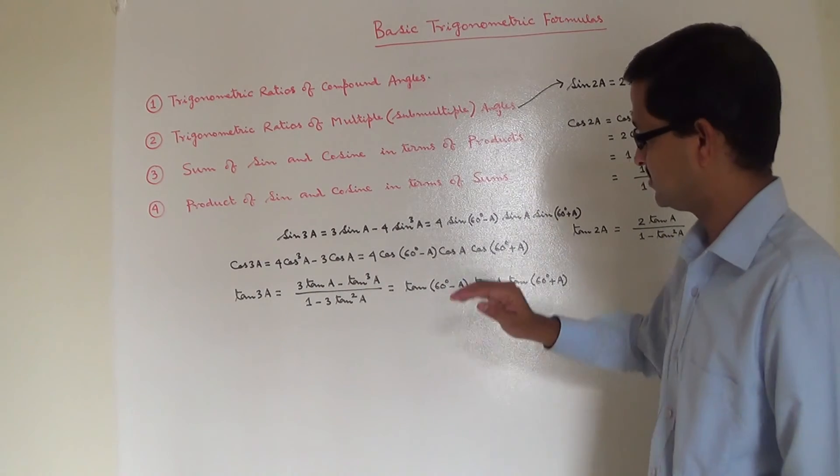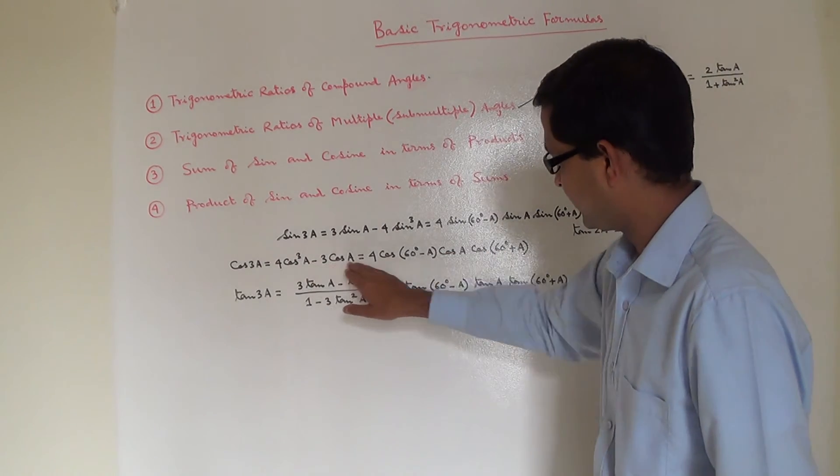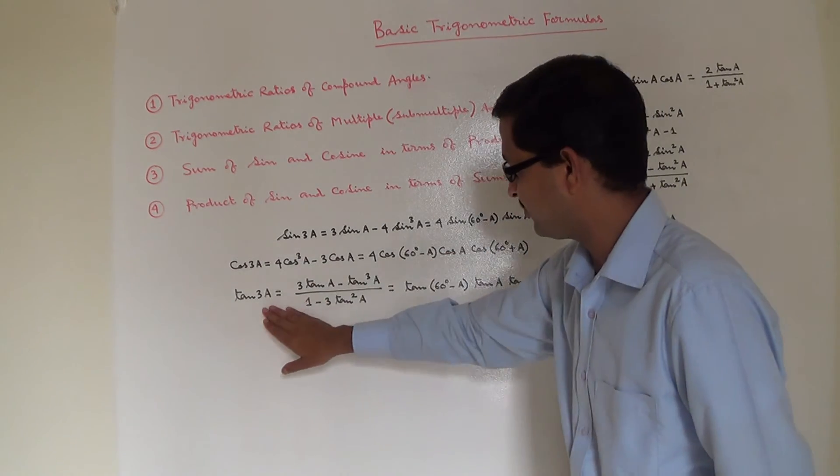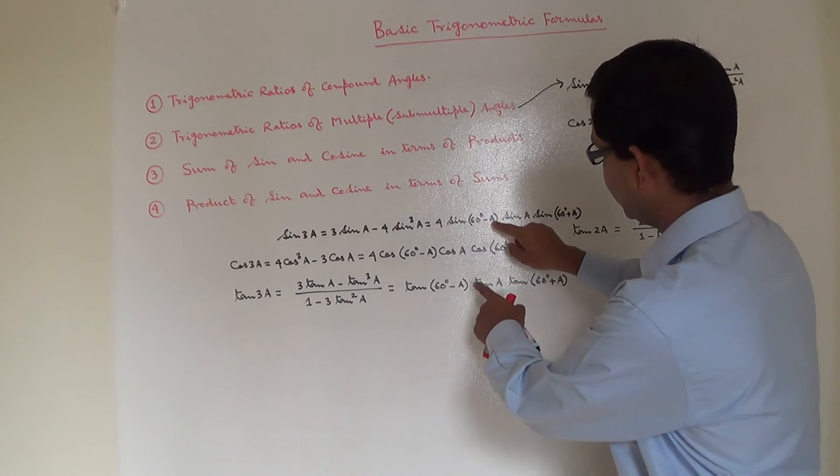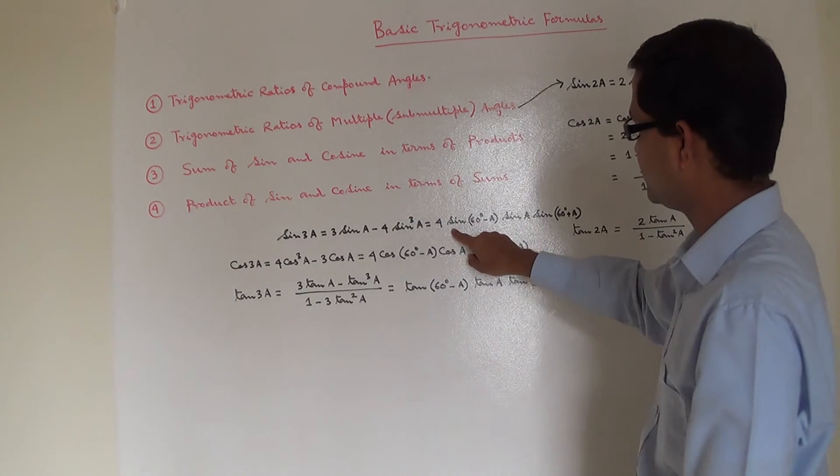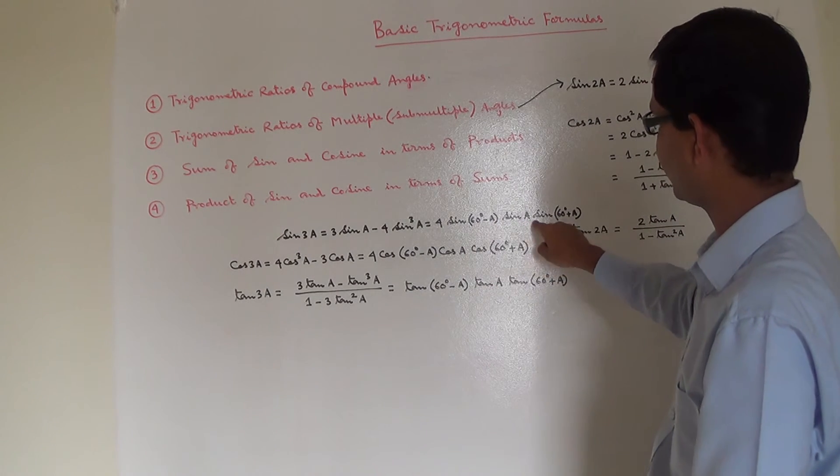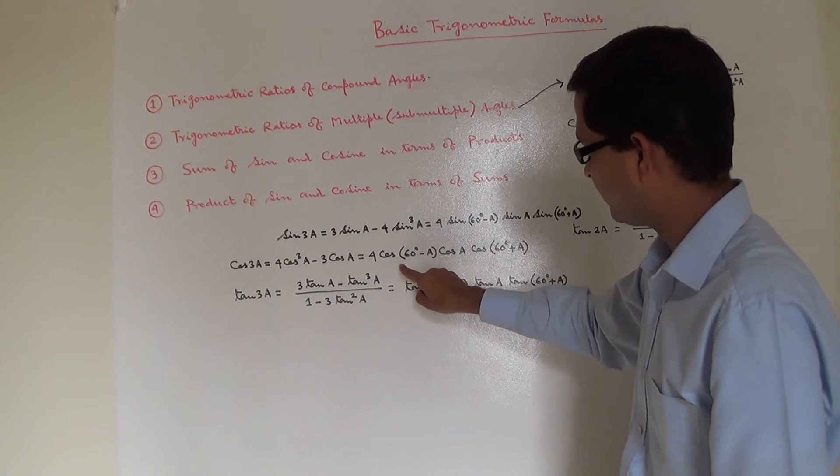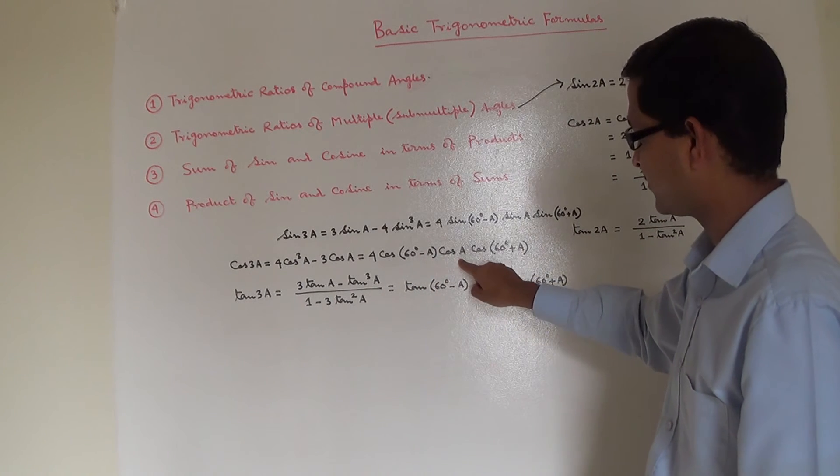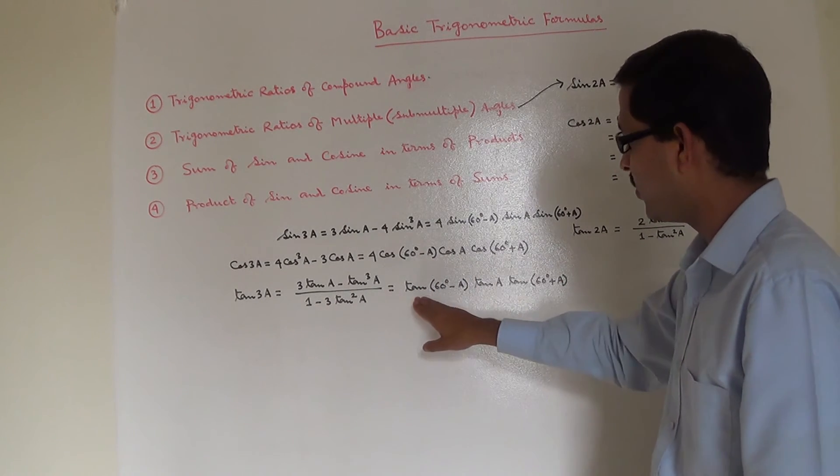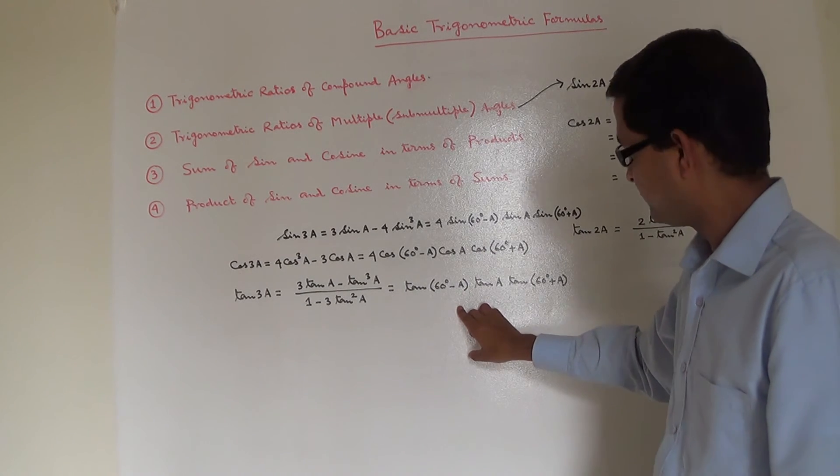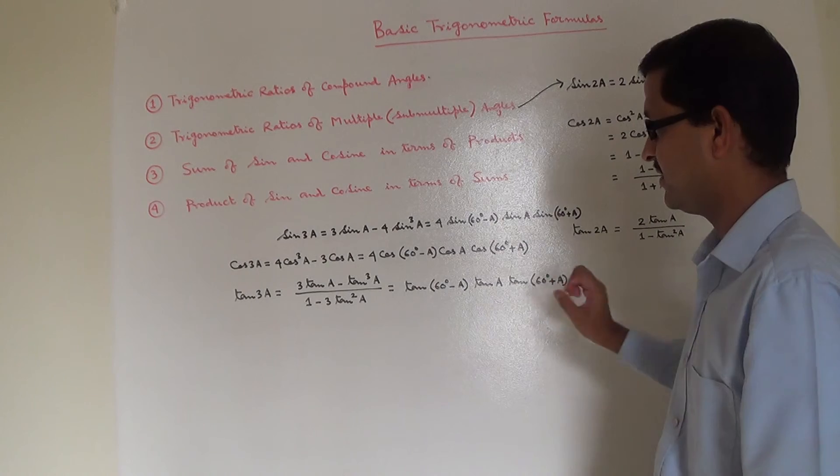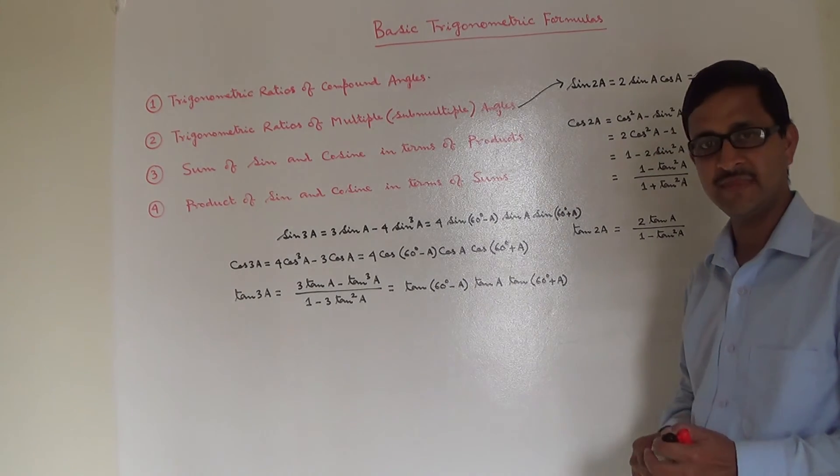Going good. So cos 3A has two different flavors. Tan 3A has two flavors. One is this one and another one I got by dividing these two: 4 sin of 60 degrees minus A into sin A into sin of 60 degrees plus A, divided by 4 cos of 60 degrees minus A into cos A into cos of 60 degrees plus A. Which gives this result: tan of 60 degrees minus A into tan A into tan of 60 degrees plus A. Clear?